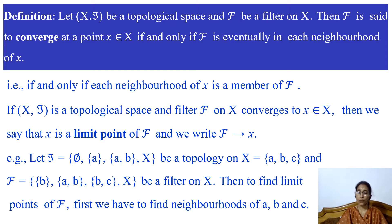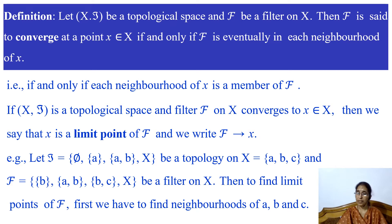Now we define convergence of a filter. Let (X, T) be a topological space and let F be a filter on X. Then F is said to converge at a point x in X if and only if F is eventually in each neighborhood of x. This means each neighborhood of x belongs to F, that is, each neighborhood of x is a member of F. So F converges to point x if and only if the neighborhood filter at x is contained in filter F.